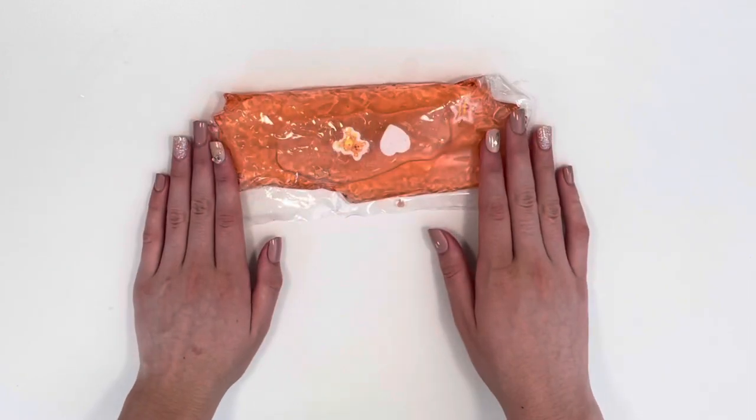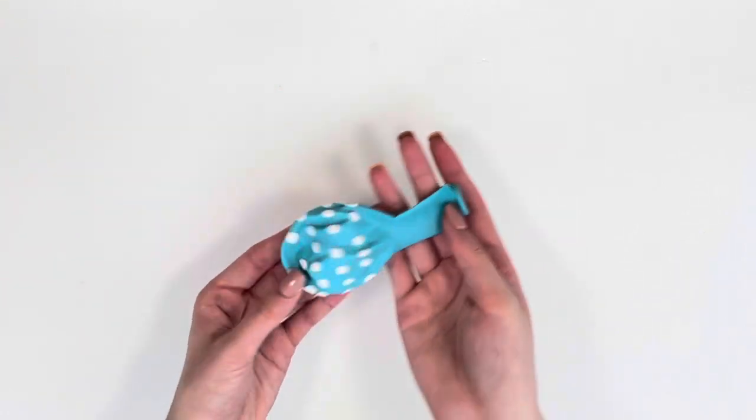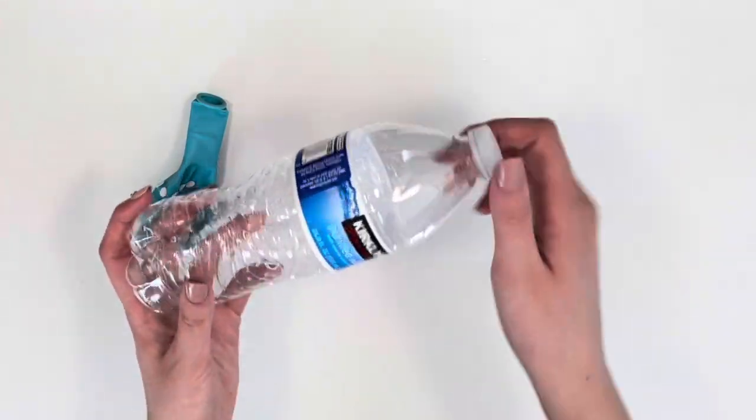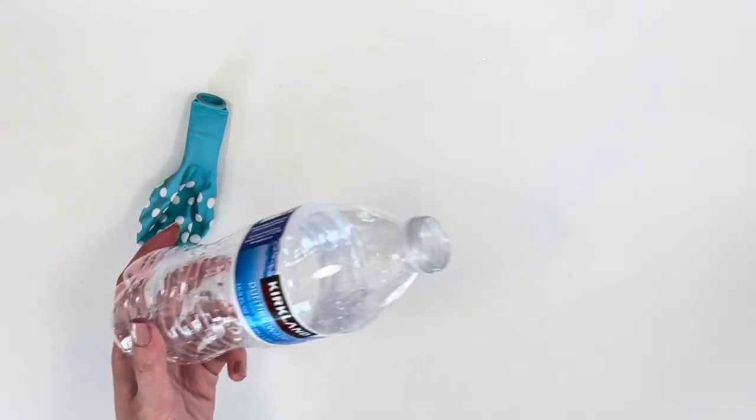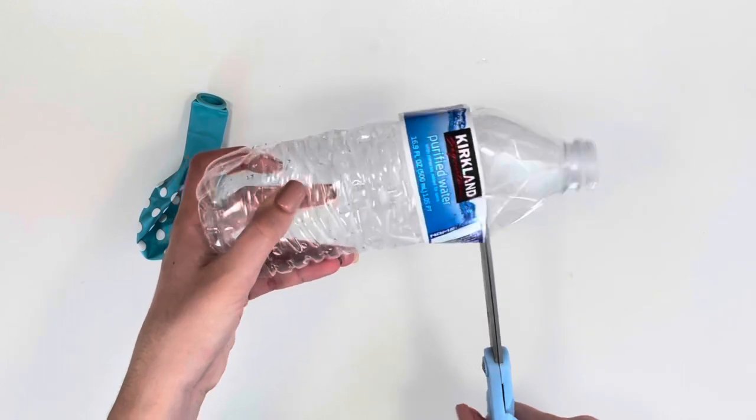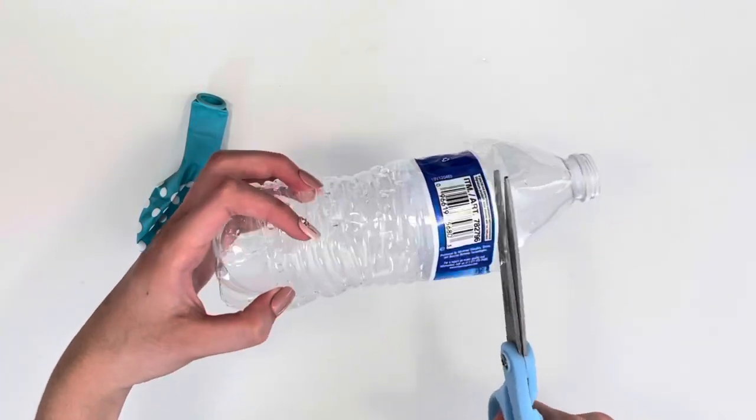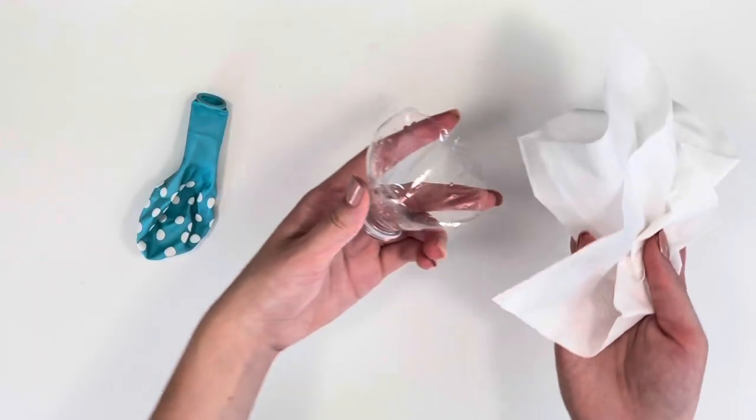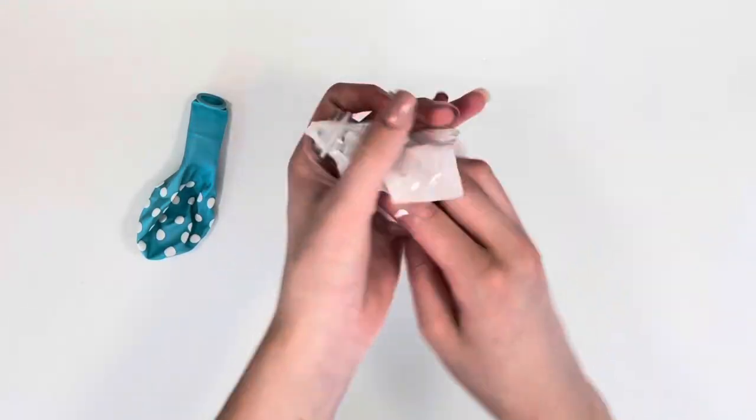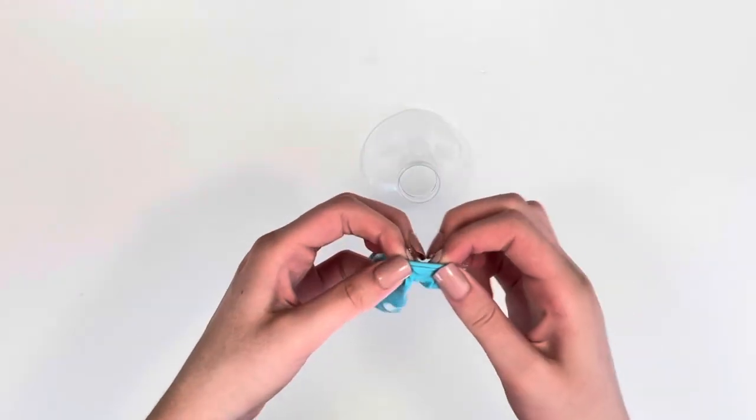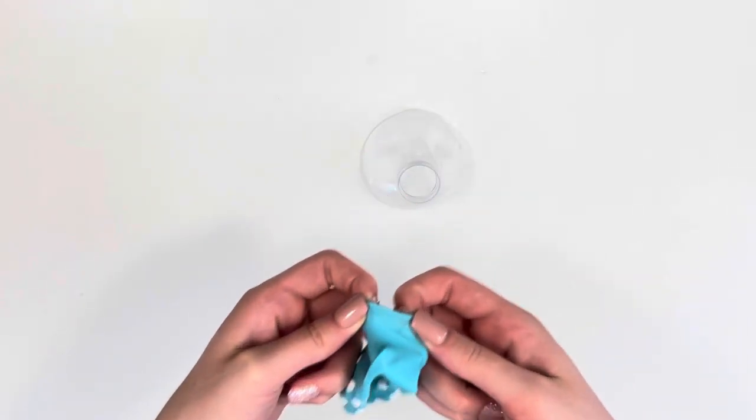Next up, I'll be showing you guys how to make a DIY stress ball. Grab some kind of a balloon and some kind of empty plastic water bottle. Unscrew the top and then start cutting right above the label. Essentially, we just made a funnel. Now grab a tissue or something and just dry it off quickly because we do not want it to be wet. Place it upside down and put the balloon onto the funnel.